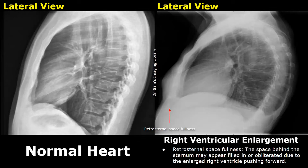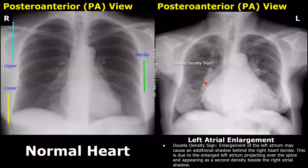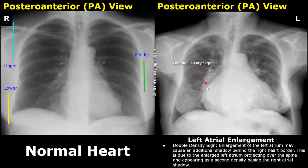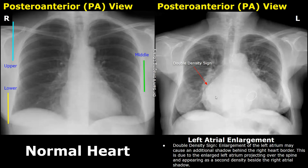Now we have a case of left atrial enlargement. One of its features on X-ray is the double density sign. Due to the enlargement of the left atrium, an additional shadow is found behind the right heart border. This is due to the enlarged left atrium projecting over the spine and appearing as a second density beside the right atrial shadow — this is the double density sign.